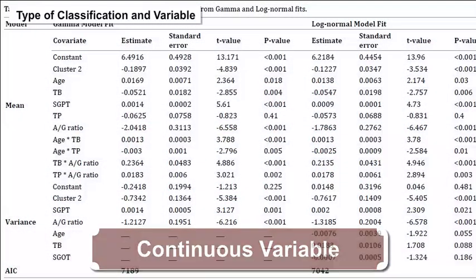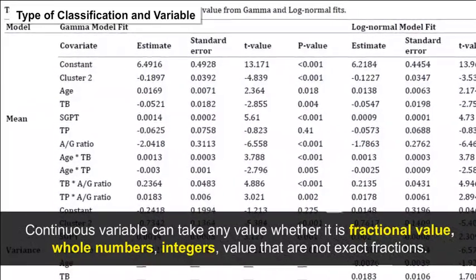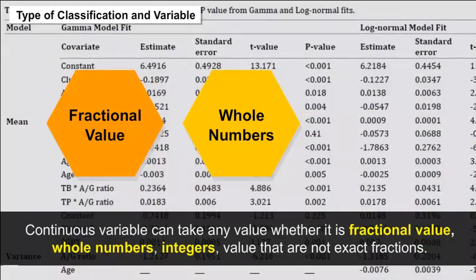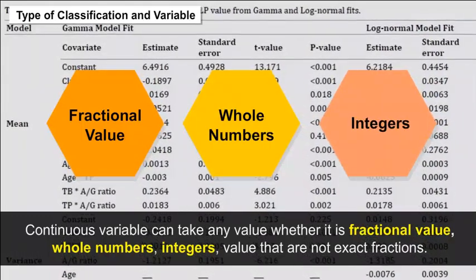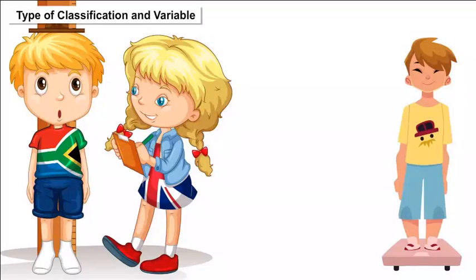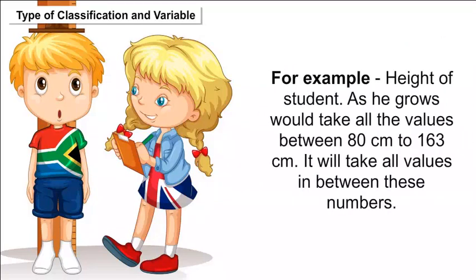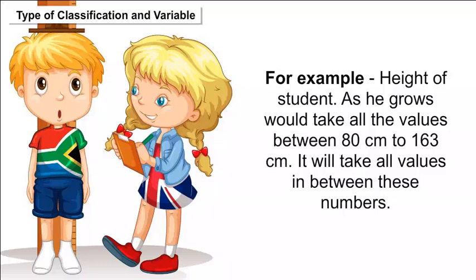Continuous variable: A continuous variable can take any value — whether fractional, whole numbers, integers, or values that are not exact fractions. Examples of continuous variables are weight, height, time, and distance. For example, the height of a student as he grows would take all values between 80 cm to 163 cm, including all values in between.